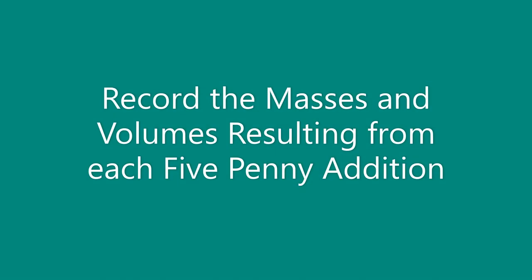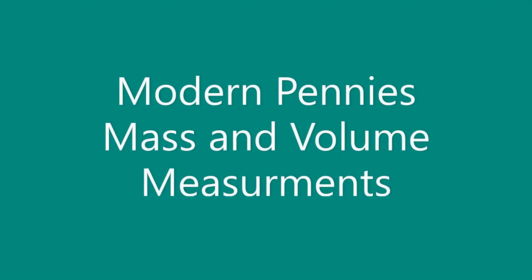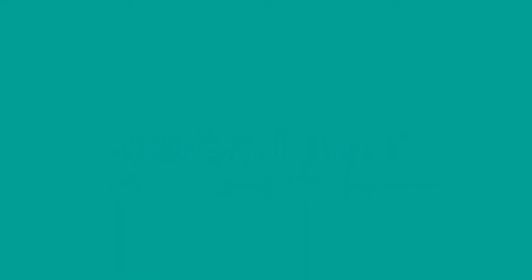To do this, we're going to have to find some masses and some volumes of each penny. We're going to do this in groups of five. We're going to see what the increase in water volume is as we add the pennies — this displacement will raise the volume by the size of the pennies. We'll also record the mass. We're going to do that first with some modern pennies, say the last 25 years.